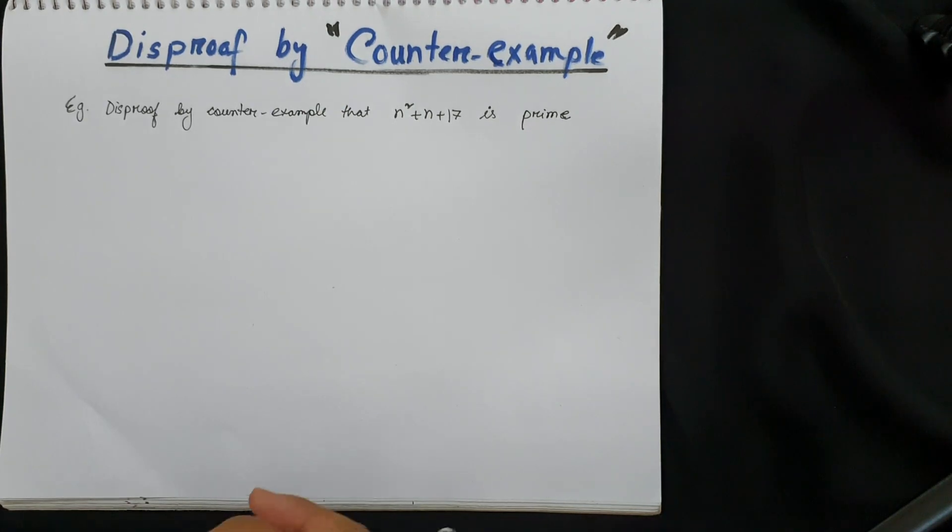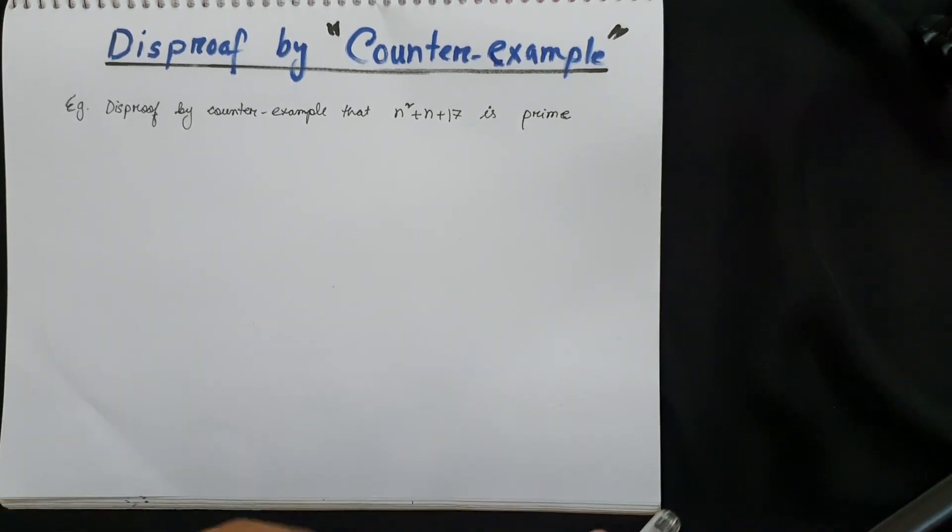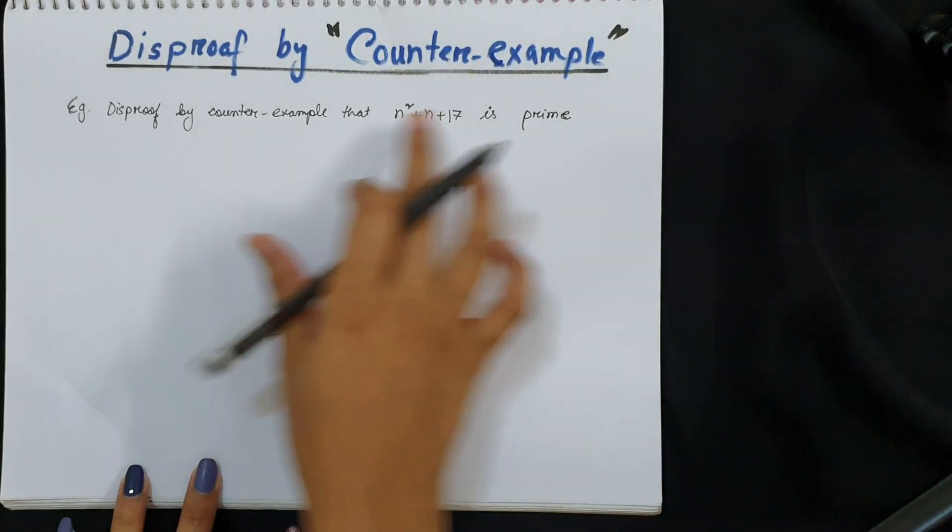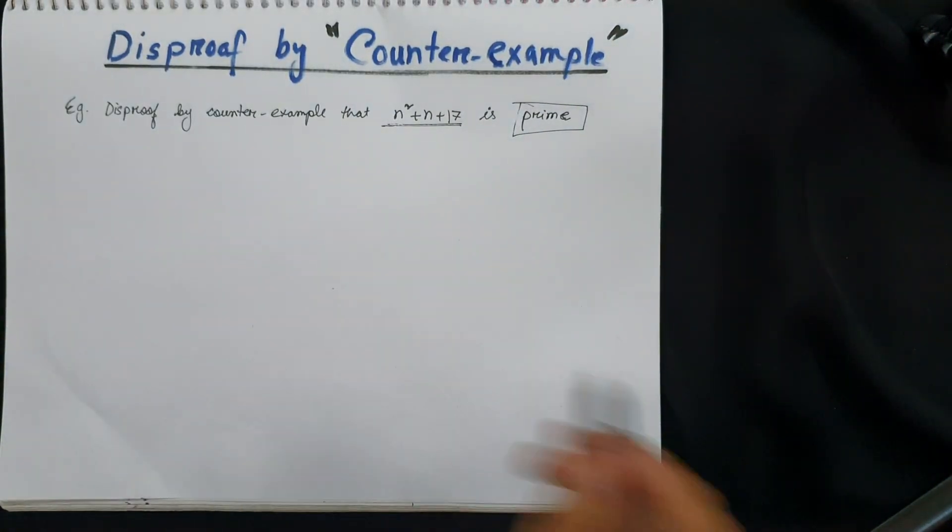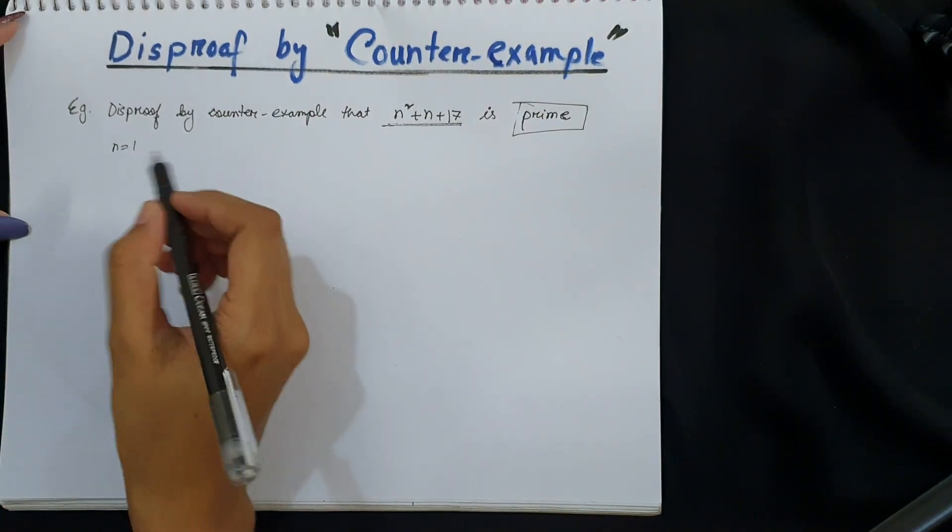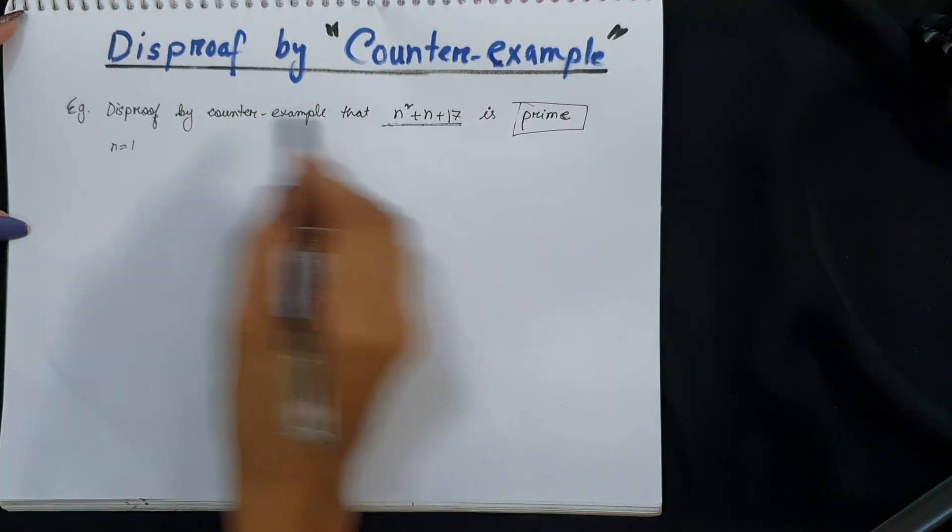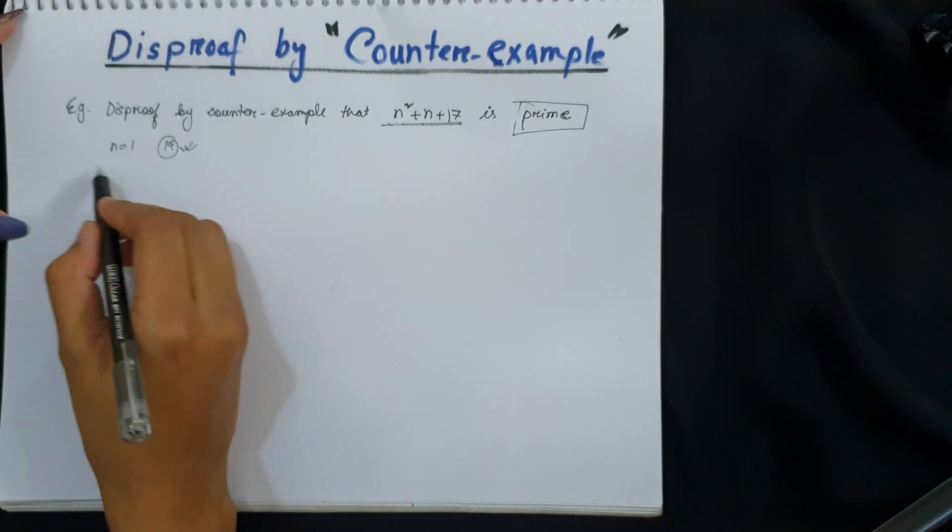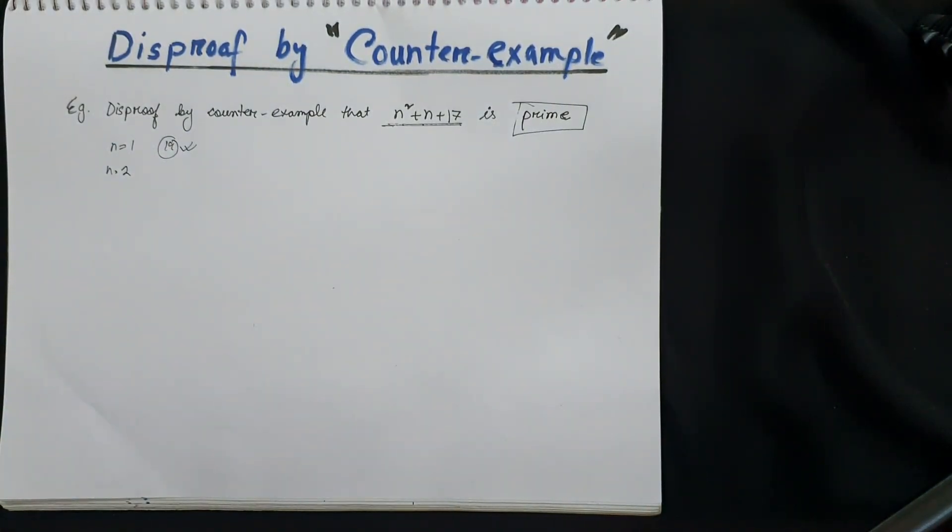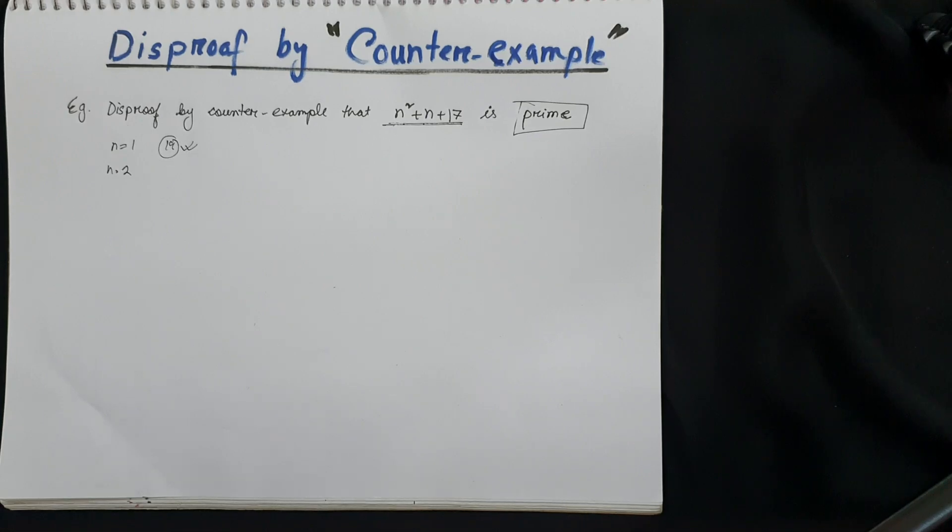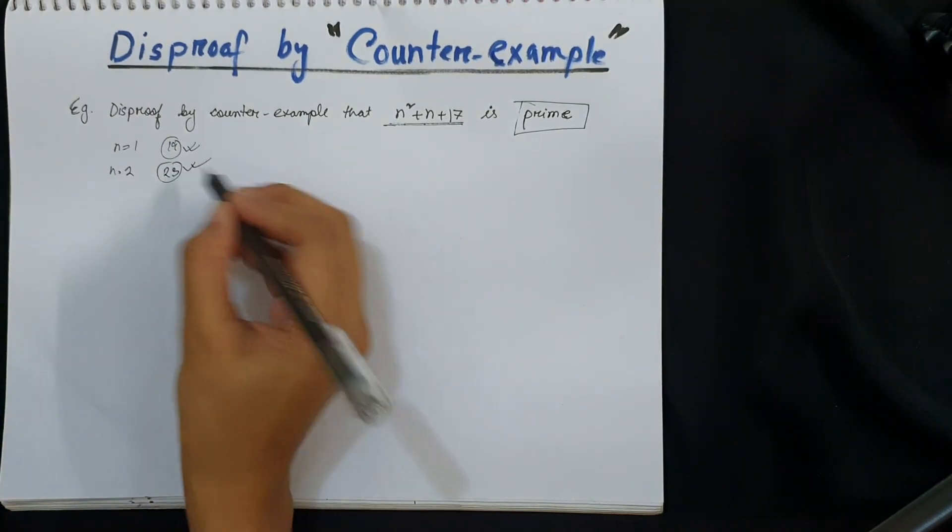So for example, we need to disprove that n² + n + 17 is always prime. So if we start choosing random values, it's gonna take a lot of time. For example, n equals 1 it becomes 19, it is a prime number. n equals 2 it becomes 4 + 2 + 17, it becomes 23, it's also a prime number.